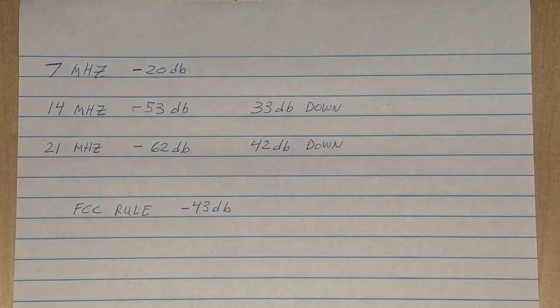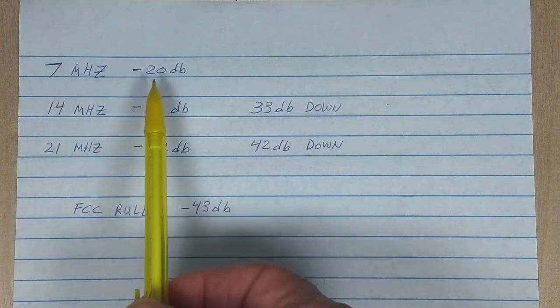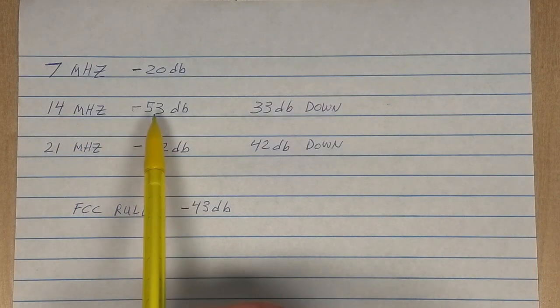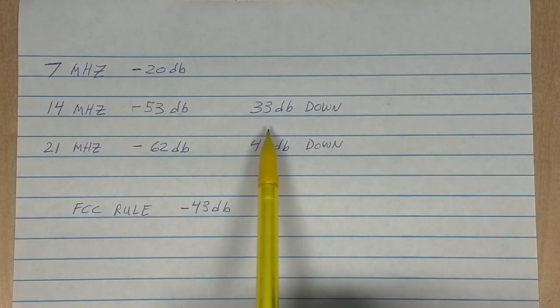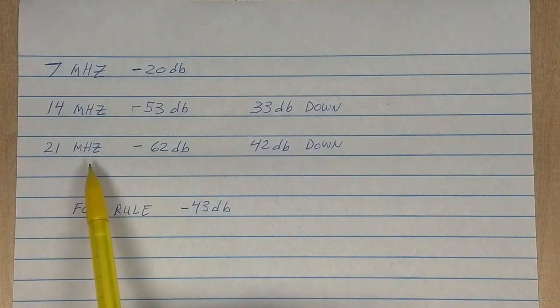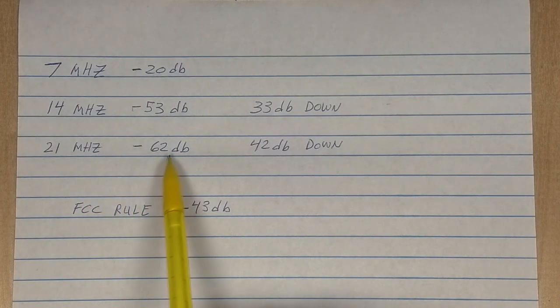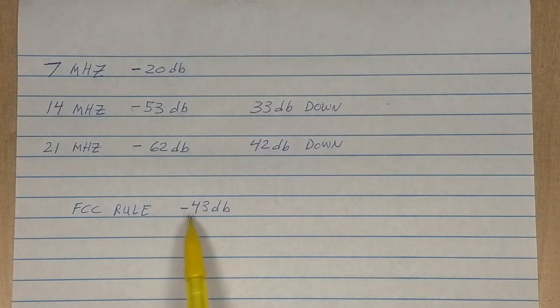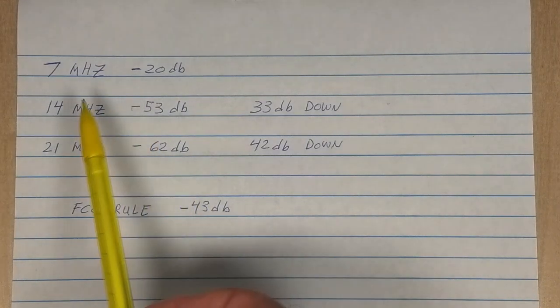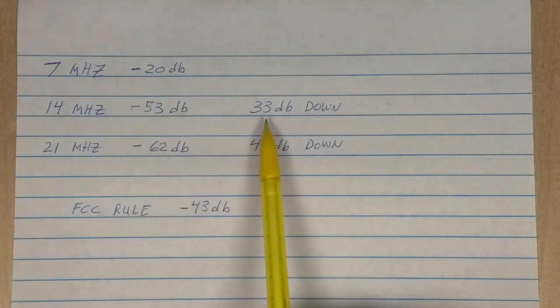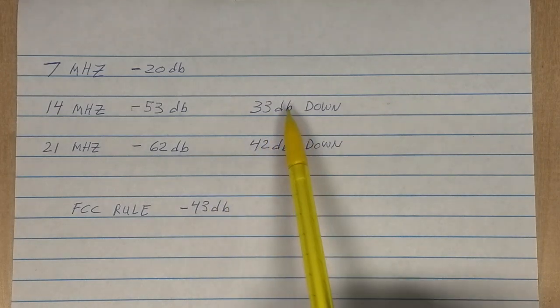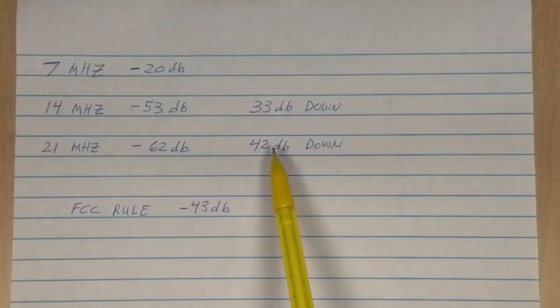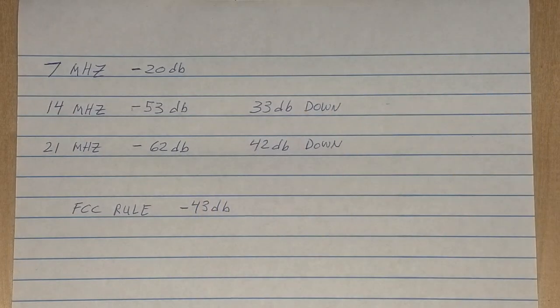Here are the results of that test. Our fundamental was at 7 MHz measuring minus 20 dB. Our second harmonic was at 14 MHz measuring minus 53 dB. That's only 33 dB down from the fundamental. Our 21 MHz harmonic was measuring minus 62 dB, so that's 42 dB down from the fundamental. Now the FCC rule is that a harmonic has to be minus 43 dB below the fundamental. So our second harmonic was 10 dB higher than what is allowed, which in absolute magnitude is 10 times the level of what it should be. Here we're only off by 1 dB, which is about 26% more than the allowable limit.